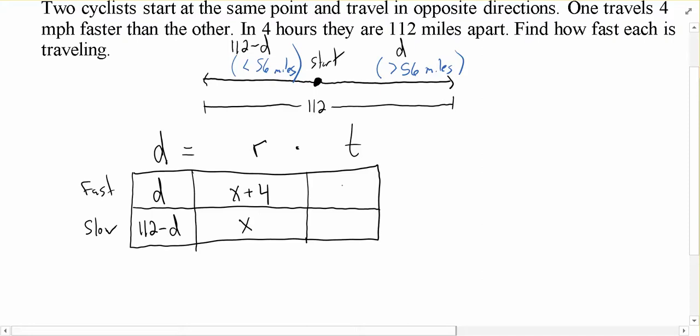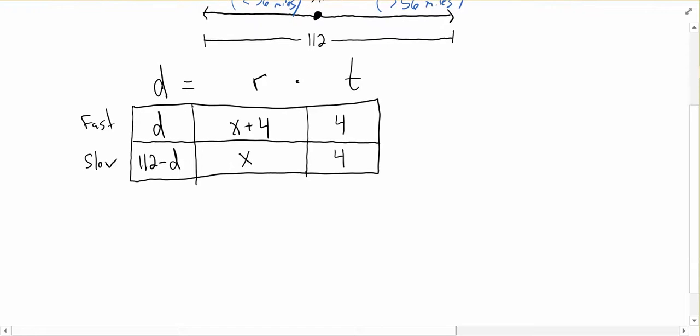Now as far as time is concerned, they both went for 4 hours. There was no head start or anything, so their time is 4. Alright. So now we have two equations, two unknowns. Now we can solve it that way by actually having two equations, two unknowns. I want to talk about an alternate approach we could take to this. So we could look at this and say D equals 4 times X plus 4 as one equation and 112 minus D equals 4 times X as my second equation, and I can solve this system. That's one approach that we can take to this problem.